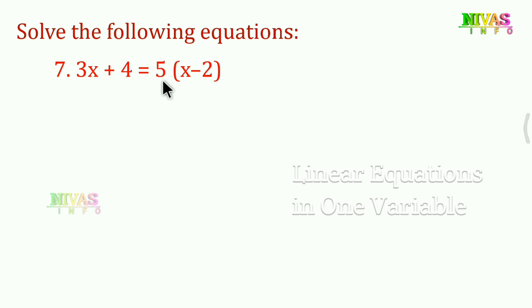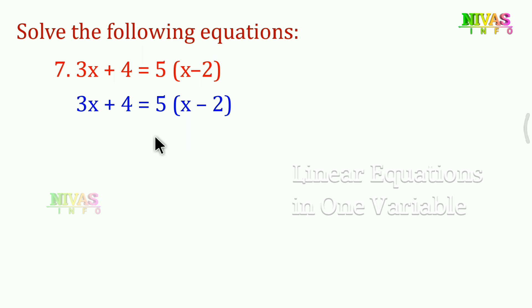When we multiply, if you have two negatives the value is positive; one negative and one positive gives a negative value. So expanding: 5 into x is 5x, and 5 into negative 2 is negative 10. So 3x plus 4 is equal to 5x minus 10.